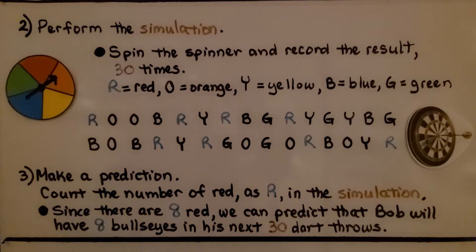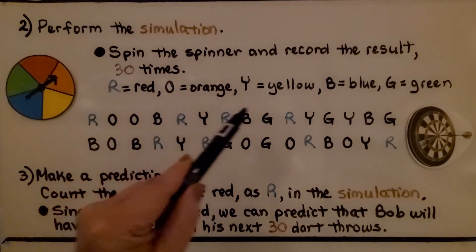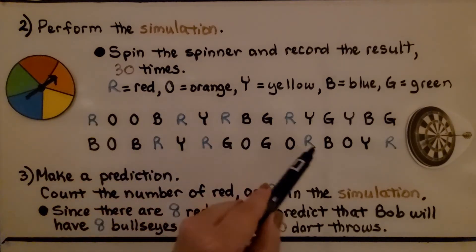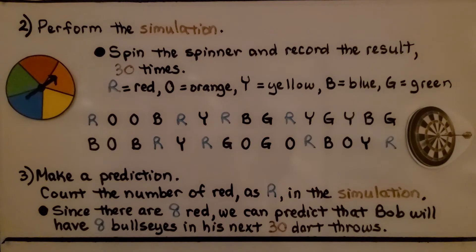The third thing we do is make a prediction. We count the number of reds, the r in the simulation. We've got one, two, three, four, five, six, seven, eight. Since there are eight red, we can predict that Bob will have eight bullseyes in his next thirty dart throws.